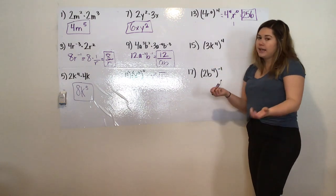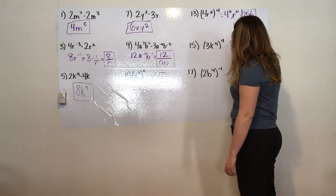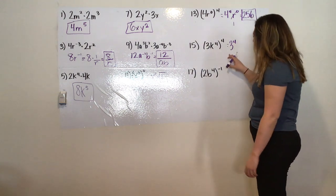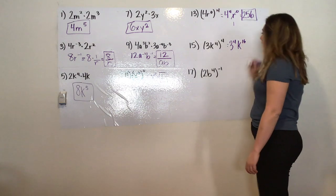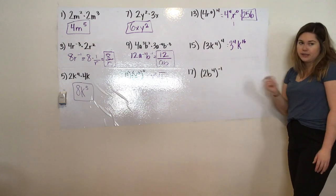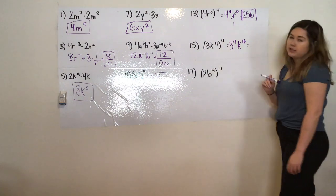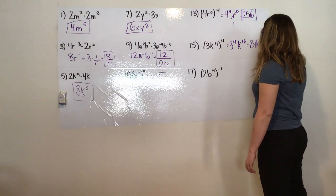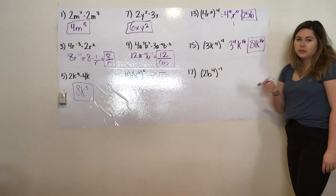15, again, same thing, dealing with that power rule. I'm going to do 3 to the power of 4, and then we have k to the power of 16, because 4 times 4 is 16, which gives me, I know that 3 to the power of 4 is 81, and then k to the 16th.